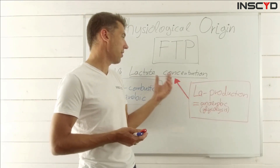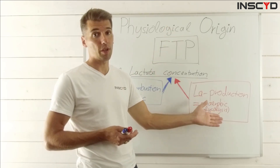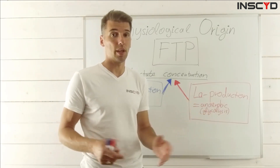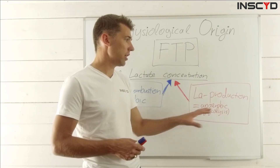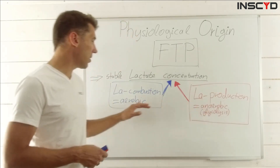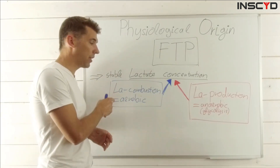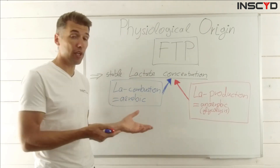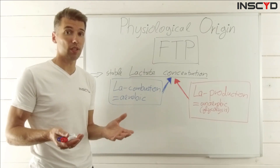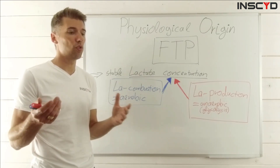If you measure a concentration of lactate in the blood and it goes up, there has to be a production of lactate — and this happens in anaerobic metabolism, more precisely called glycolysis. However, it is new to some people that there is also a lactate combustion happening simultaneously, and this occurs in the aerobic metabolism, which is happening all the time.